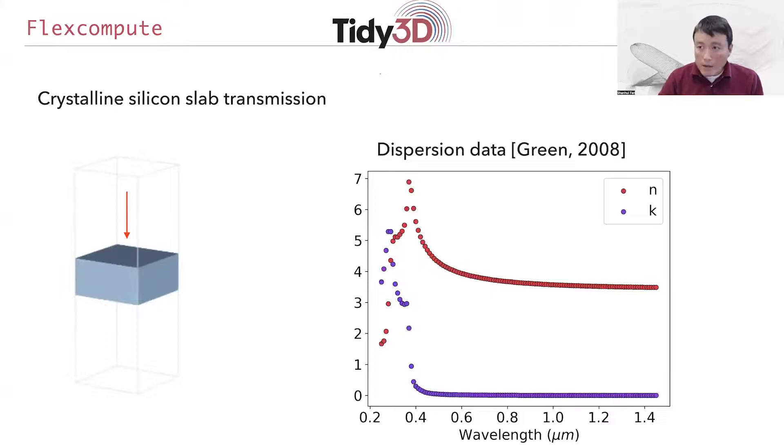On the other hand, in many practical modeling situations, you are typically given tabulated data of the permittivity as a function of frequency or wavelengths. For example, you may be interested in modeling the behavior of a silicon slab in the visible and near-infrared wavelength range. In this case, you can go to standard references, and they will tell you how the refractive index varies as a function of wavelengths. These are not given as a functional form, but rather they are given in tabulated data.